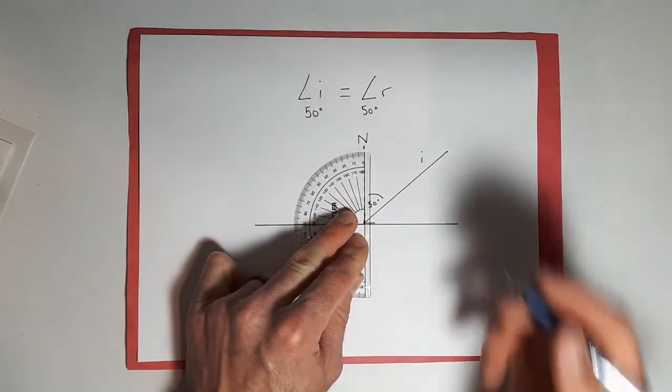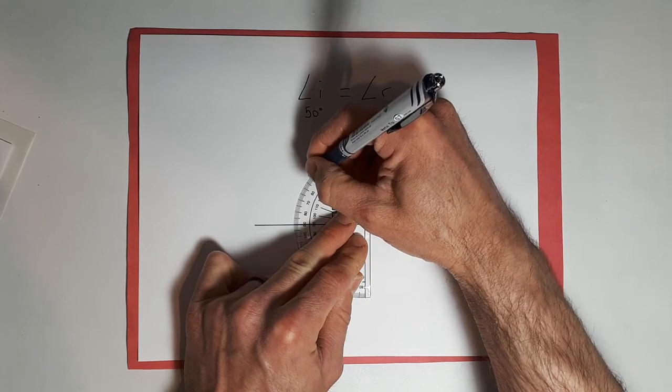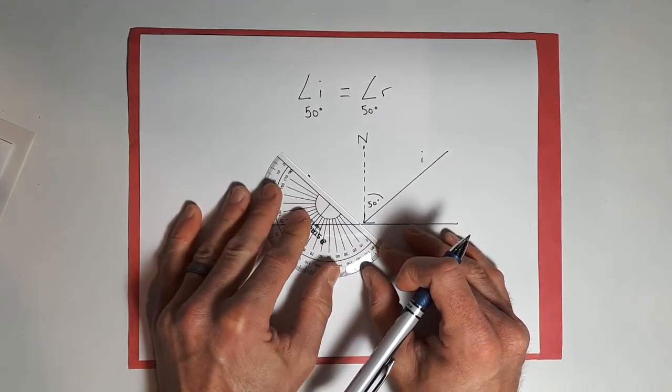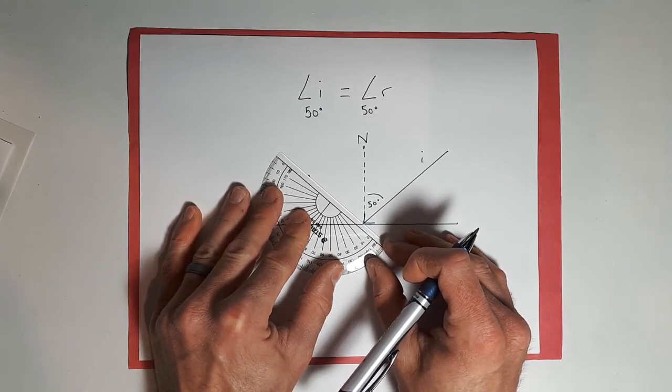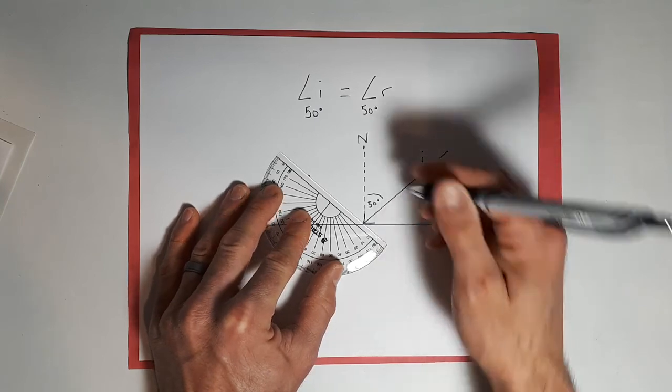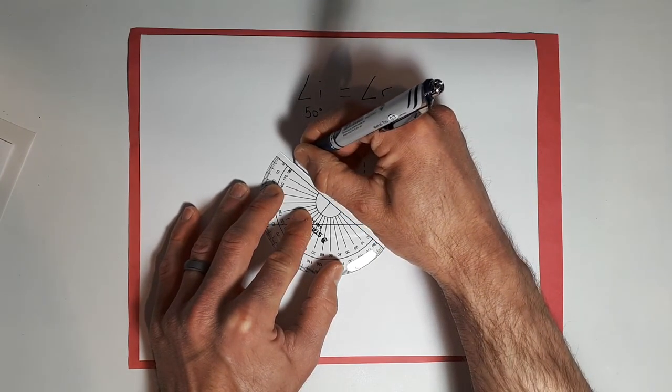So you're just going to make a little mark at 50. And you can use the back of your protractor or ruler, any straight edge really. You're just going to line up those two. So right there. There we go.